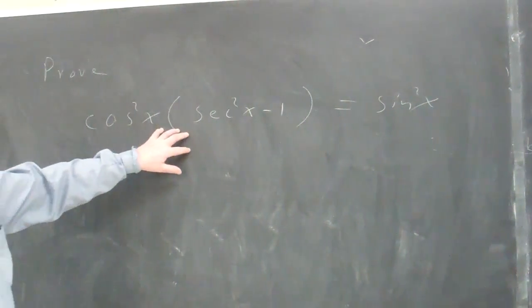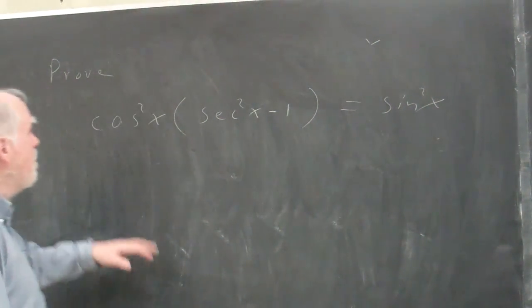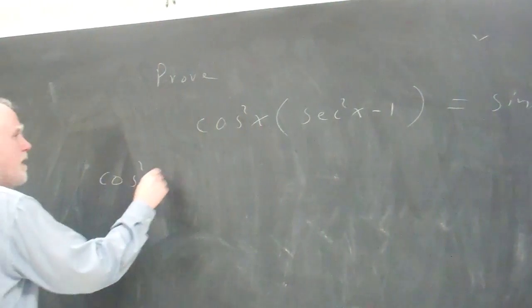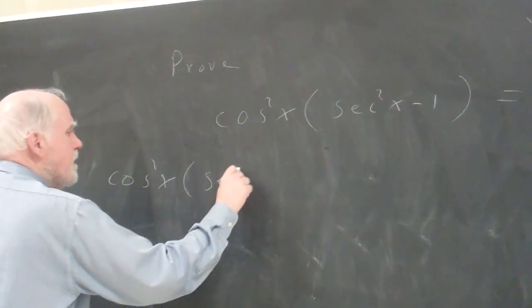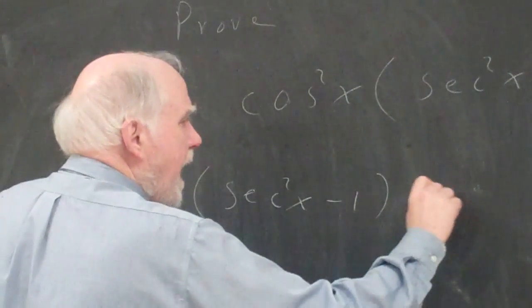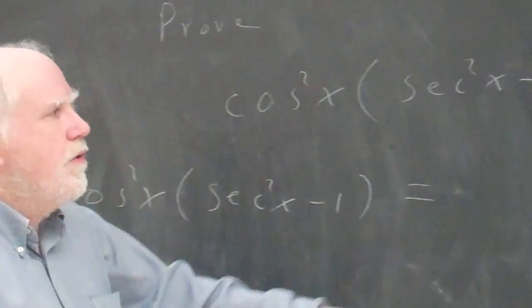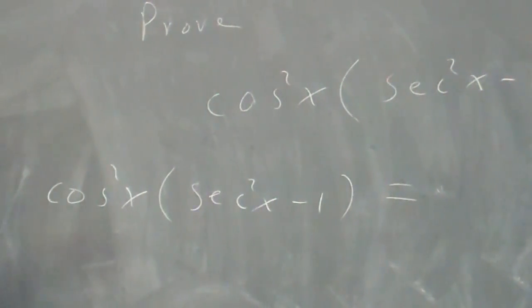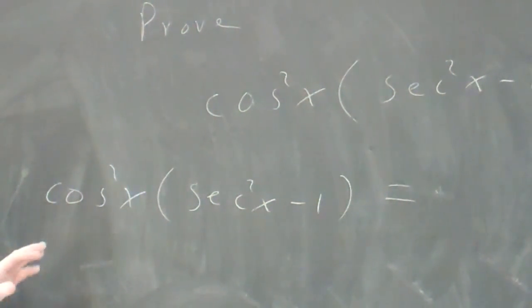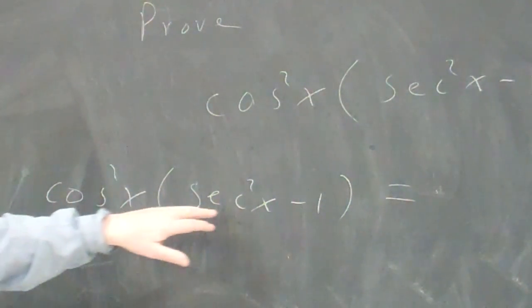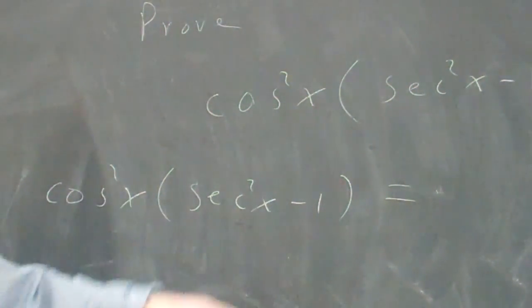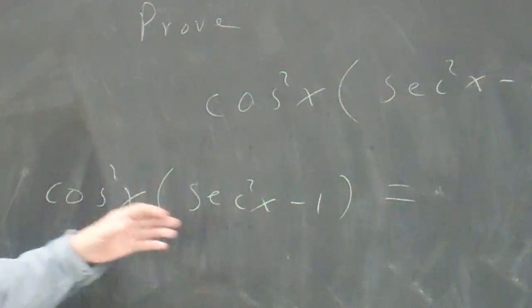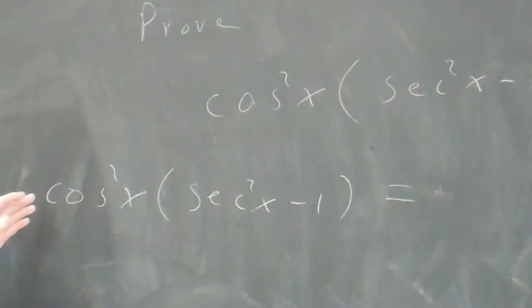Now, obviously this is the more complex side, this is the simple side. So I'm going to start with this cosine squared x times secant squared x minus 1 and try to work my way toward sine squared. Now, there's more than one way to do this. I can see a couple ways. But if I were just learning how to do this, one of the things I might think about is if you have a product, multiply the two quantities. In other words, distribute the cosine here.